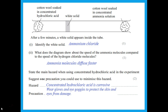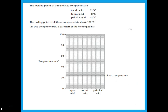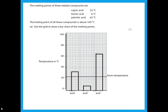He gives melting points of three related compounds and asks you to draw a bar chart. First ask yourself: are the bars touching or not? In chemistry, bar chart bars are usually not touching because the x-axis labels are specific names — capric acid, formic acid, palmitic acid — not consecutive numbers. The bars should be of equal width with equal intervals between them.